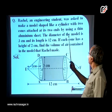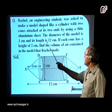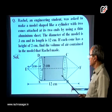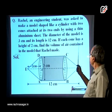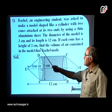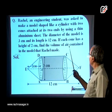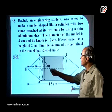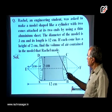The diameter of the model is 3 cm and its length is 12 cm. If each cone has a height of 2 cm, find the volume of air contained in the model that Rachel made.